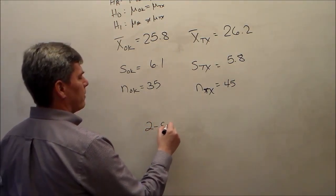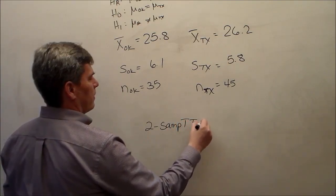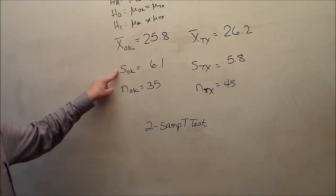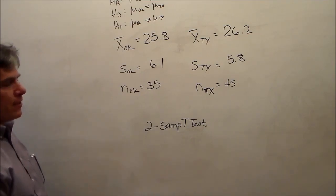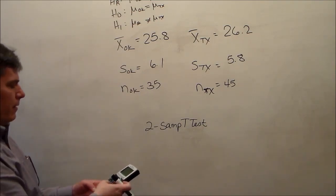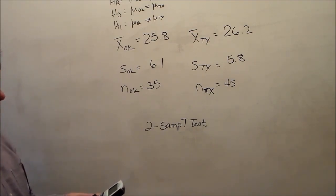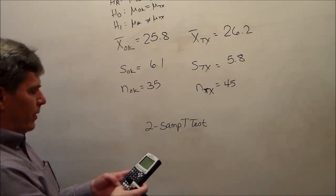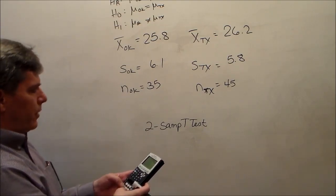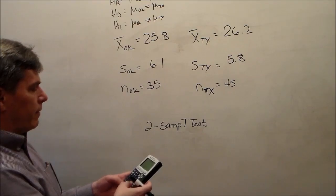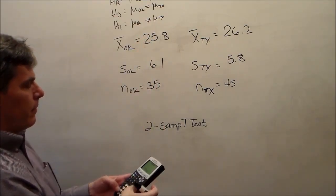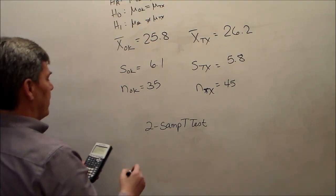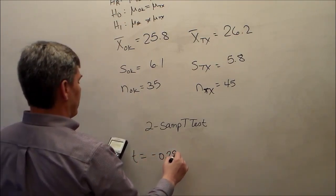Two samples. And it's going to be a t-test. Why is it a t? We don't know sigma. Since we don't know sigma, we've got to use a t-test. And we plug the information into this calculator. x-bar 1 is 25.8, s1 is 6.1, n1 is 35. x-bar 2 is 26.2, s2 is 5.8, n2 is 45. Alternative hypothesis is not equal to. We never, ever, ever pool, don't pool, and then calculate. So we get a test statistic of negative 0.2973 and we get a p-value of 0.7671.